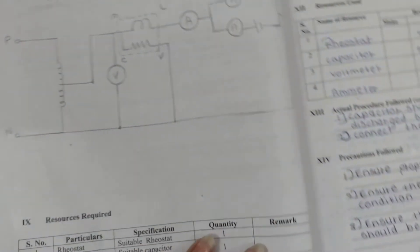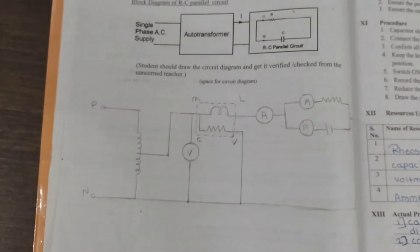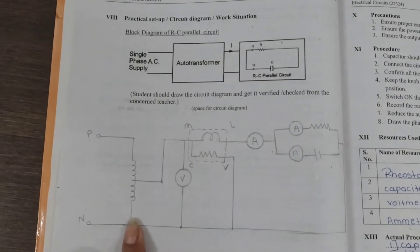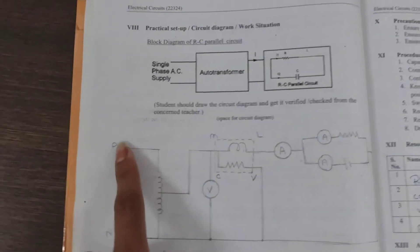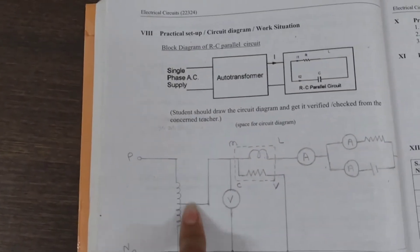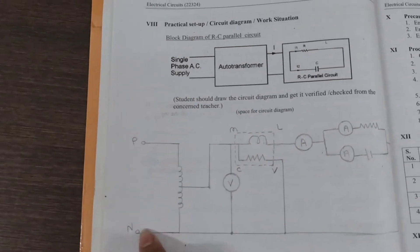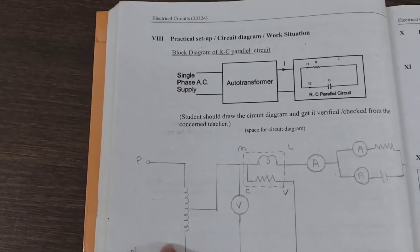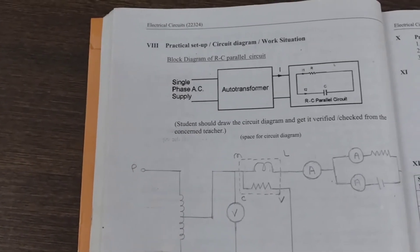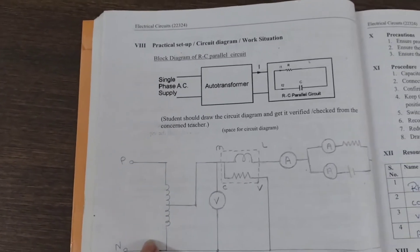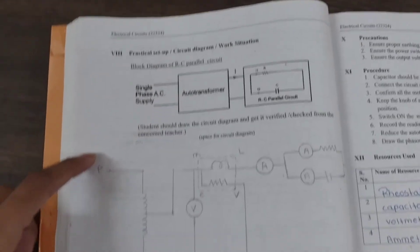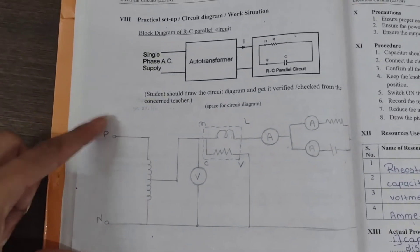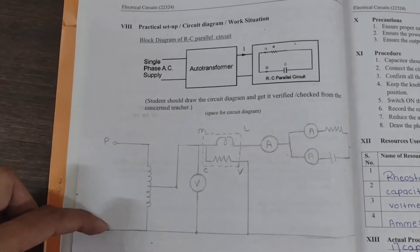Then we can see the actual circuit diagram for this practical. This is the single-phase autotransformer, and a single-phase 230-volt AC supply is given to this autotransformer. This autotransformer has two terminals: phase and neutral.